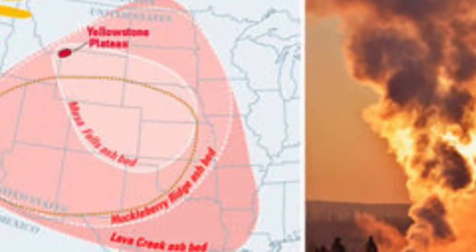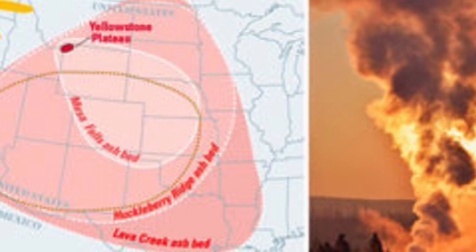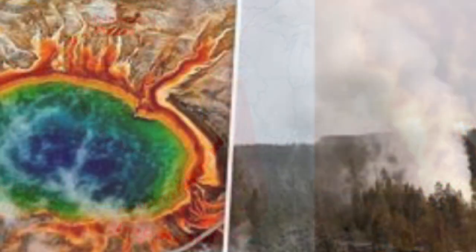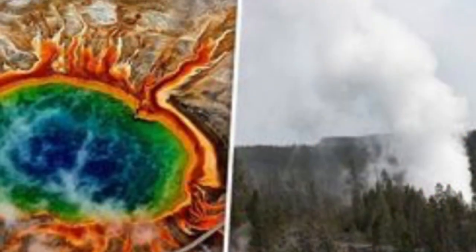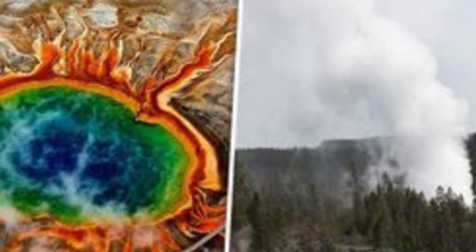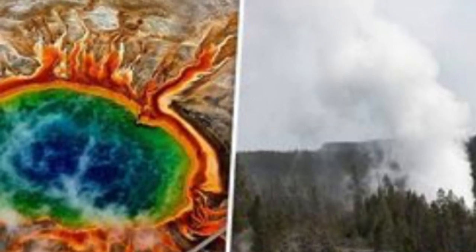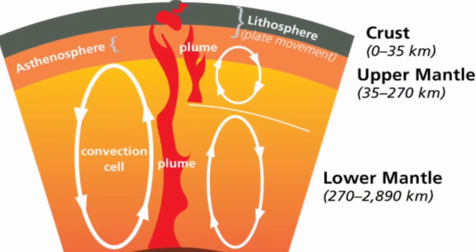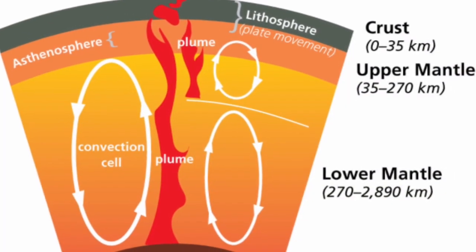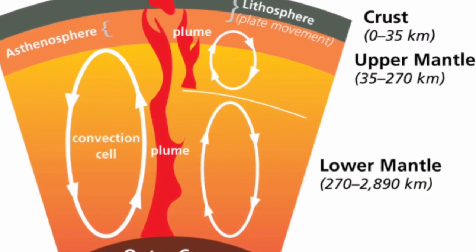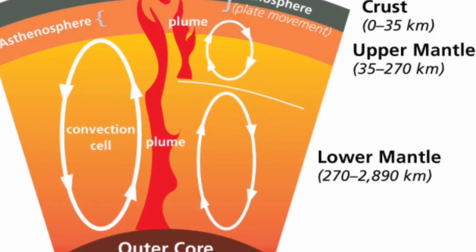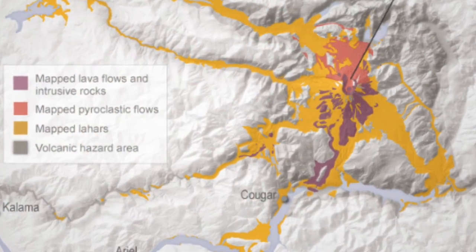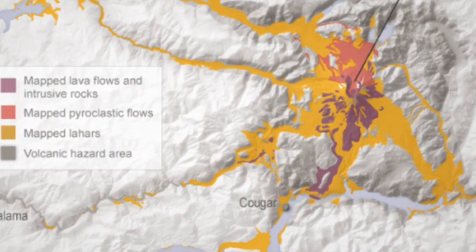Yellowstone National Park covers some 3,472 square miles of land across three states in the northwest US. The Yellowstone volcano caldera formed some 640,000 years ago and measures 34 by 45 miles — 55 by 72 kilometers — in the northwest corner of Wyoming.